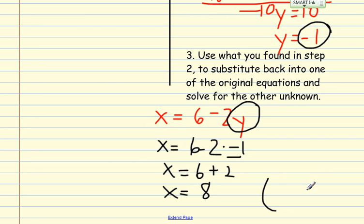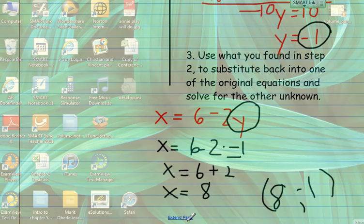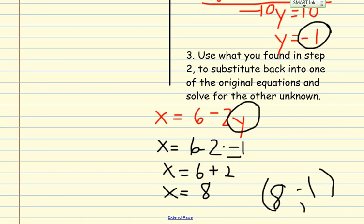So can you write our final solution from substitution? If you are getting 8 as our x value and our y value is negative 1, you are right on track. Another way you could check this is by using the method we used yesterday. Graph it. Graph these two lines. Do they cross at the point 8 negative 1? Remember, a solution is where the two lines intersect.